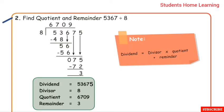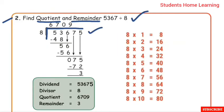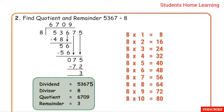Practice problem: 5367 divided by 8 — find the quotient and remainder using long division. First number is 5; 5 is smaller than 8, so take the next digit. Now we have 53. Look in the 8 times table for the nearest multiple to 53.